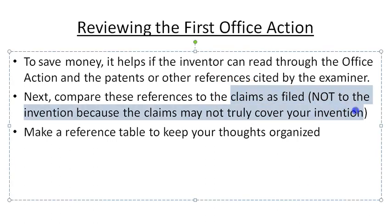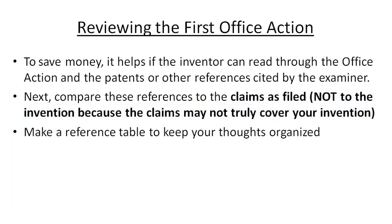This is important. Inventors will often say these references the patent examiner found are way off base — they're showing a bicycle with four wheels and my bicycle only has two wheels. What you have to remember is the examiner is not comparing your invention or your product to these references; they're comparing your claims to these references. If you just read your claims and try to block out what you think your invention is, then compare them to the reference, oftentimes you can see where the examiner's coming from. Maybe your claims are slightly too broad and they might overlap with some of these prior art references.